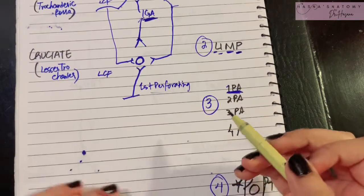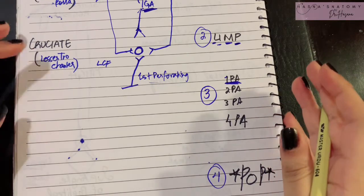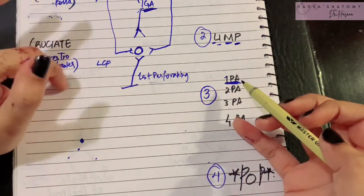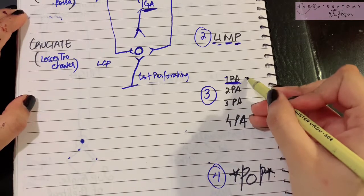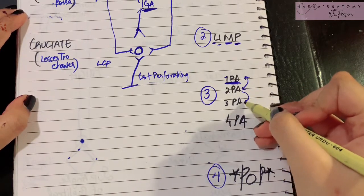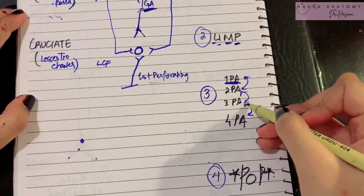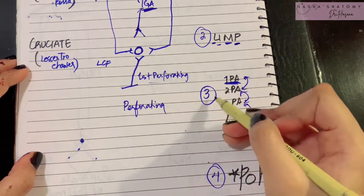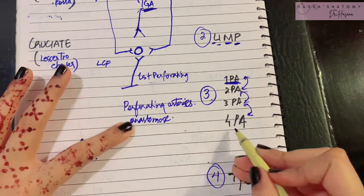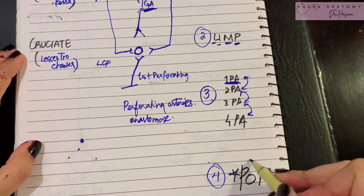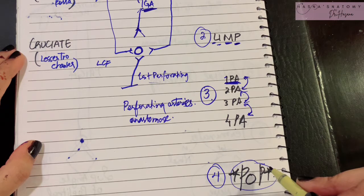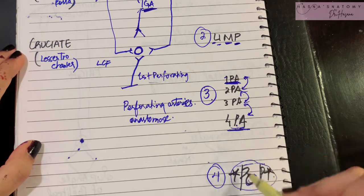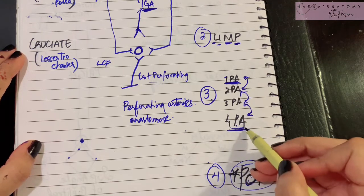After the cruciate anastomosis, once the first perforating artery has given its ascending branch to it, the first perforating artery will anastomose with the second, the second with the third, and the third with the fourth. Overall, all the perforating arteries anastomose with one another. Finally, the last part of the connection is the popliteal artery — the termination of the femoral artery from the anterior compartment of the thigh.